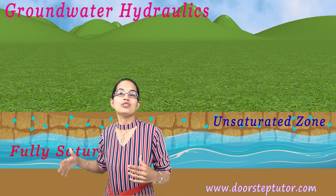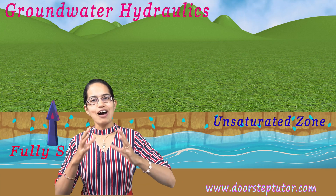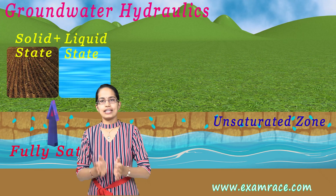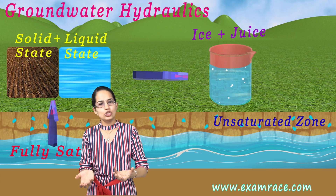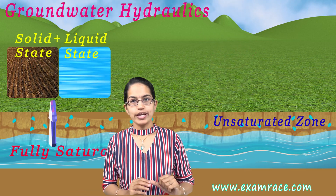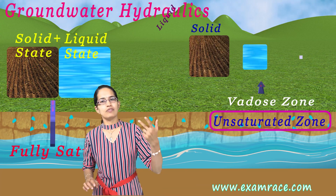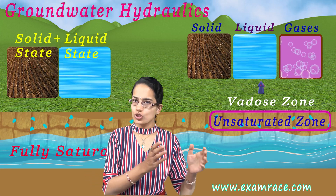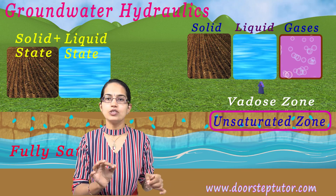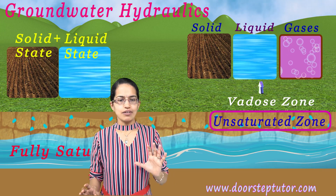Simply explained, the saturated zone is a zone where you have a mixture of solid state and liquid state — in the demonstration it was ice and juice, and in the groundwater it is soil and water. However, in the upper layers of the soil, which is the unsaturated zone or vadose zone, we have three phases: the solid, liquid, and gaseous phase. Solid is the soil, liquid is the water, and the gaseous phase is the air present within the spaces.